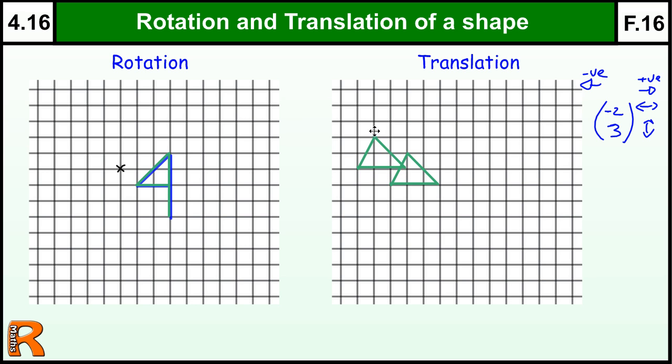One, two, three. So three squares up. So that would be a translation from A to B of minus two, three.